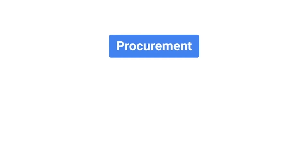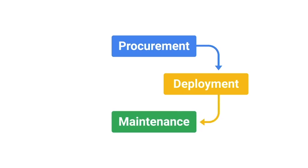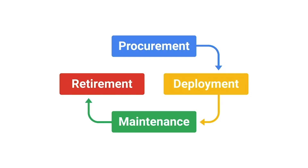There are four main stages of the hardware lifecycle. Procurement — where hardware is purchased or reused for an employee. Deployment — where hardware is set up so the employee can do their job. Maintenance — where software is updated and hardware issues are fixed if and when they occur. Retirement — the final stage where hardware becomes unusable or no longer needed and needs to be properly removed from the fleet.